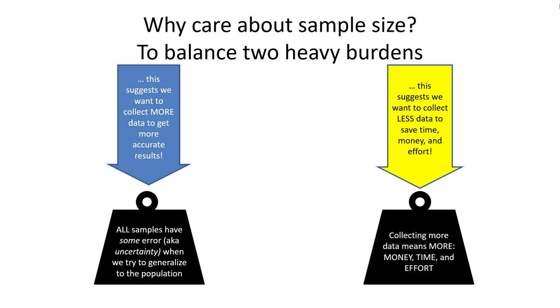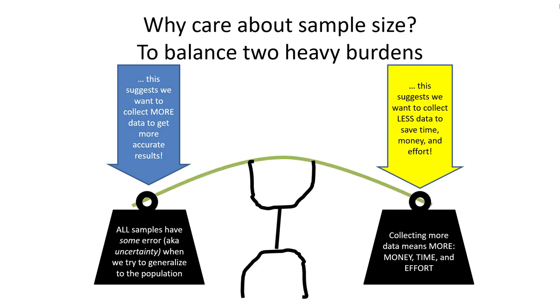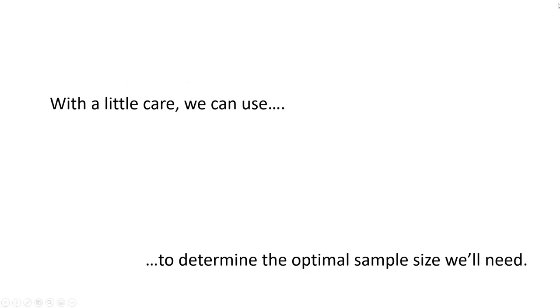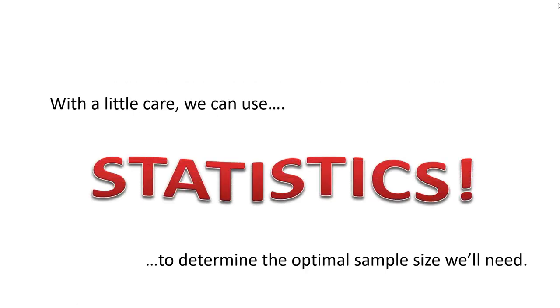On one hand, we want to collect a census. On the other hand, we want to collect no data at all. In truth, the job of a marketing researcher is to figure out how to balance these two heavy facts so that we are willing to live with the weights of both. With just a little thought and care, we can use statistics to determine the optimal sample size we're going to need.